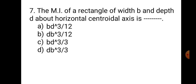Question number 7. The MI of a rectangle of width B and depth D about the horizontal centroidal axis is: A. BD³/12, B. DB³/12, C. BD³/3, and D. DB³/3. This is the basic standard formula for MI of a rectangle about the horizontal axis, and it is BD³/12. Hence, the answer is A. BD³/12.